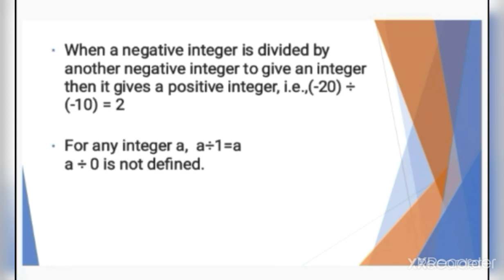Another important point for the division of integers: when a negative integer is divided by another negative integer to give an integer, the result is a positive integer. For example, minus 20 divided by minus 10 — here both integers are negative, so the answer is a positive integer, that is 2.